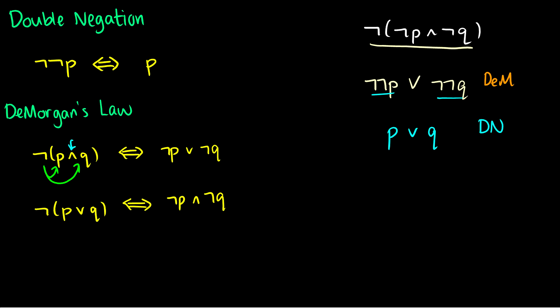The most important law out of the four so far is definitely De Morgan's law. This is used everywhere in set theory, propositional logic, and boolean logic. If you're going to remember one thing from this entire video, remember De Morgan's law.